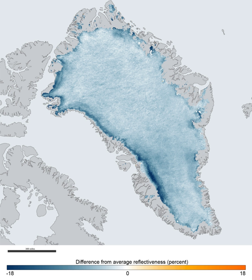The Greenland Ice Sheet is a vast body of ice covering 1,710,000 square kilometres, roughly 80% of the surface of Greenland.